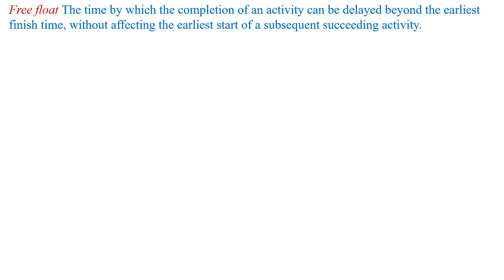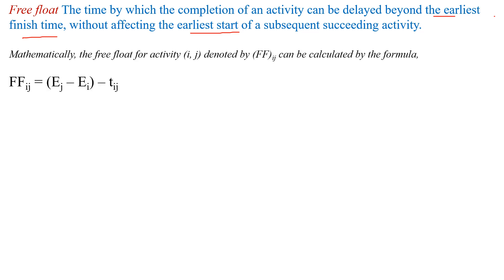Free float is the time by which the completion of an activity can be delayed behind the earliest finish time without affecting the earliest start time of the succeeding activity. Mathematically, free float equals Ej minus Ei minus Tij.